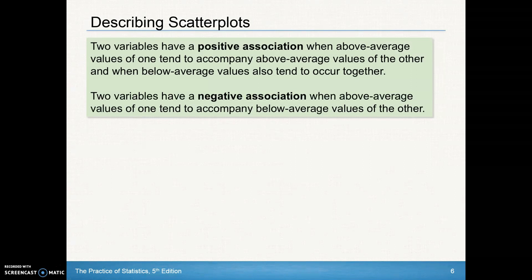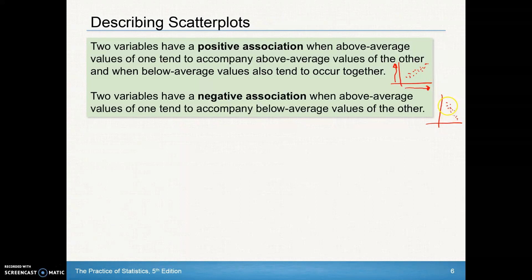Two variables have a positive association when above-average values of one tend to accompany above-average values of the other — as the explanatory variable increases, the response variable increases. Two variables have a negative association when above-average values of one tend to accompany below-average values of the other, so points with high x-values have low y-values, and vice versa.